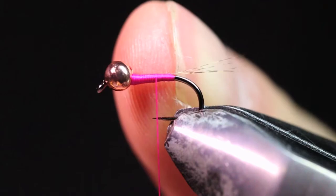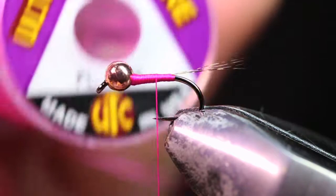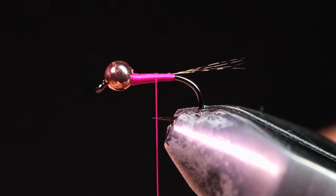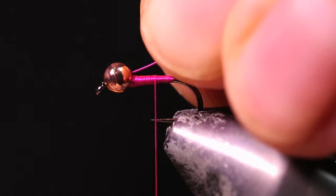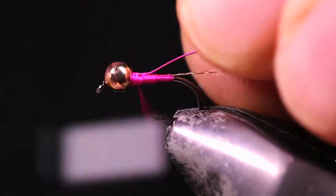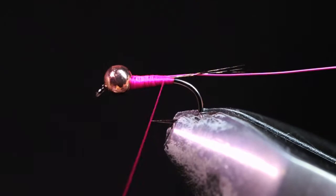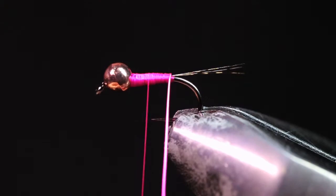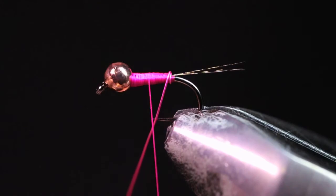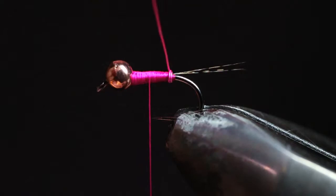Our next material we're going to be tying in is our little hot spot butt section here and we're going to be using some UTC ultrawire. This is a small and this is a fluorescent pink. And I'm going to get about four to six inch piece here which will make a bunch of flies. What I like to do is actually just grab the wire and I'm going to stick it in the back of this slotted tungsten bead. That's just going to help it from not rolling on me. And I'm going to take that down all the way back to where I tied my tails in. Now I'm just going to grab this wire and start making some wraps. And I like to make about five. Five wraps is plenty.